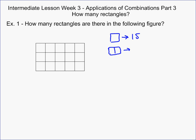So what's a better way to do this problem is to recognize that every rectangle you count is uniquely determined by picking two horizontal lines and two vertical lines. For instance, let's count this rectangle right here — that rectangle is uniquely determined by selecting this line, this line, this line, and this line.